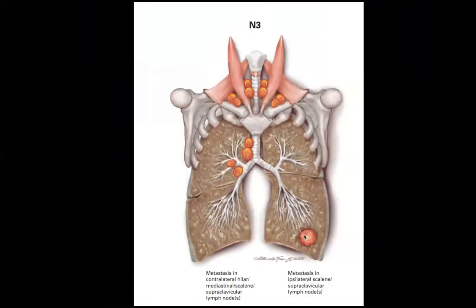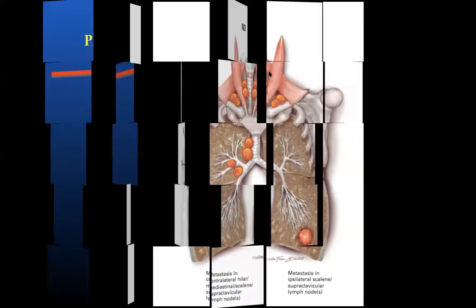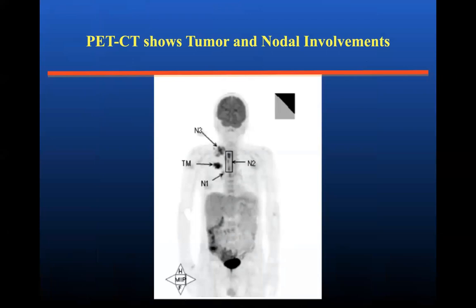This slide shows N3 patients. As mentioned, if there is contralateral hilar or interlobar lymph node positivity, the patient should be staged as N3. If there is a positive supraclavicular lymph node, it should be staged as M1 rather than N3.